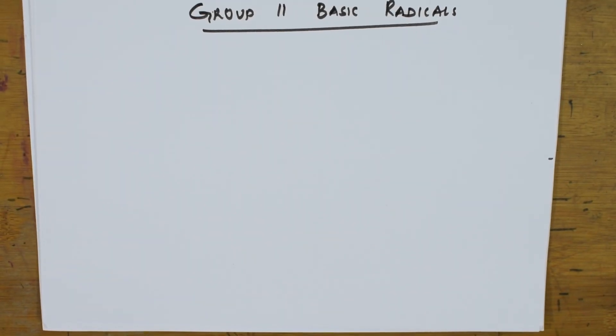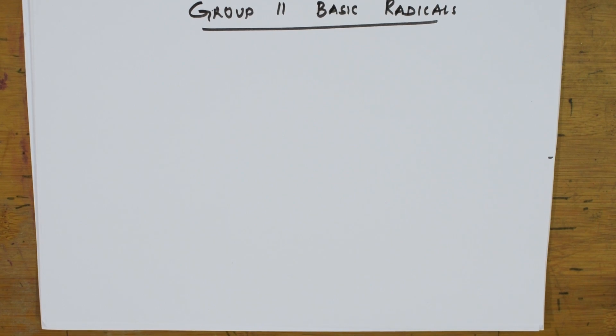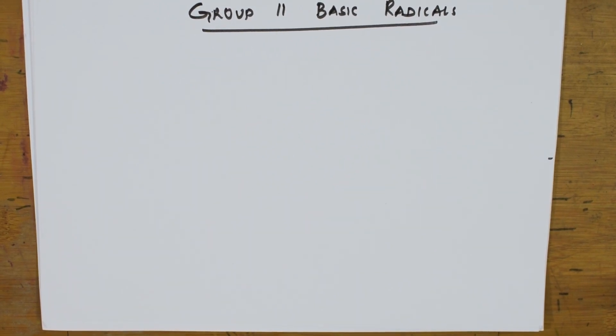Welcome back students. Now, let us start with the Group 2 basic radicals. When I have to take Group 2, let us see what are the different cations which are present in Group 2.